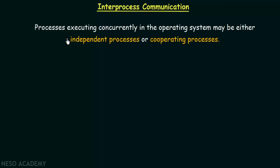Processes executing concurrently in the operating system may be either independent processes or cooperating processes. In the operating system we have two or more processes that are executing concurrently, which means they are executing at the same time. When two or more processes are executing at the same time, these processes may either be independent processes or cooperating processes.